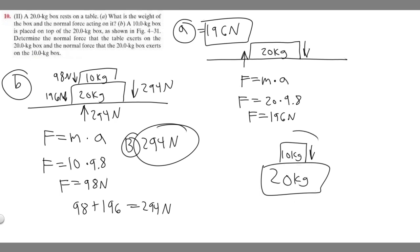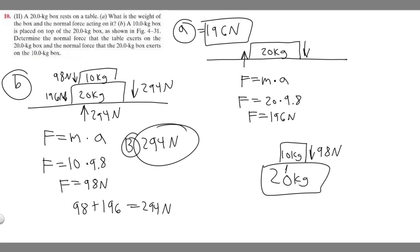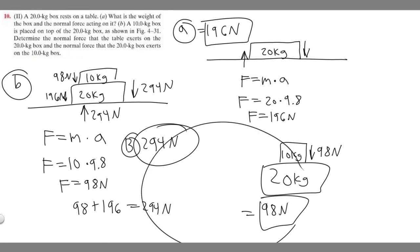The normal force is just the opposite of the force the 10 kg box exerts downward. We already calculated that: mass times acceleration gives 10 kg times 9.8, which is 98 newtons. It doesn't matter what surface is underneath — the normal force acting upward on the 10 kg box is 98 newtons. That's the answer to the second part of B.